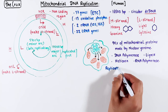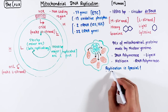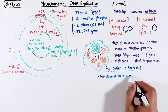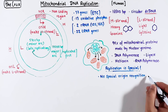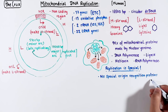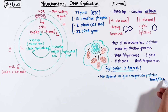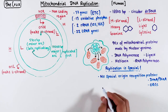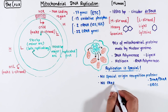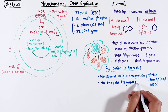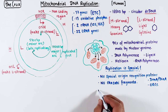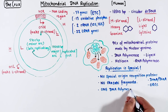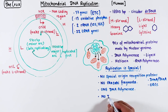Replication of mitochondrial DNA is special in some ways. There are no special proteins required to identify the origins — in bacteria we saw DnaA and DiaA proteins, and in eukaryotes you have the ORCs. Nothing of that sort exists here. There are also no Okazaki fragments; both strands are pretty much continuously replicated without any break. And only one DNA polymerase is required for the entire DNA replication.